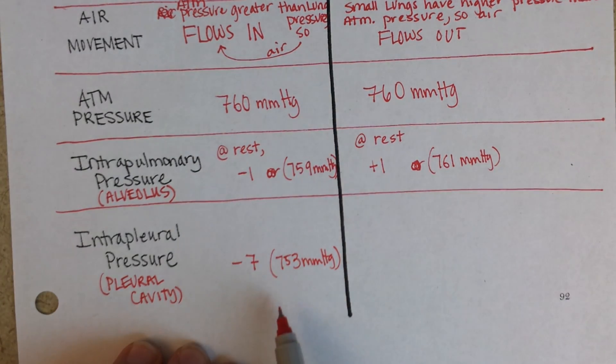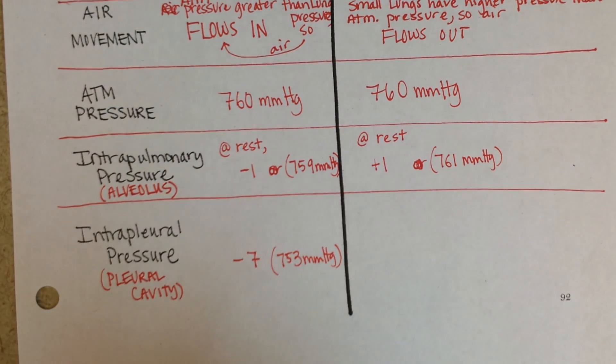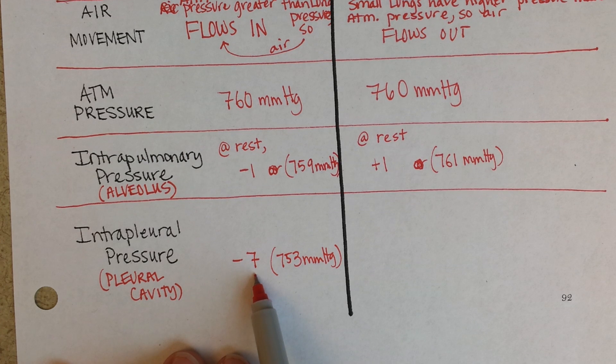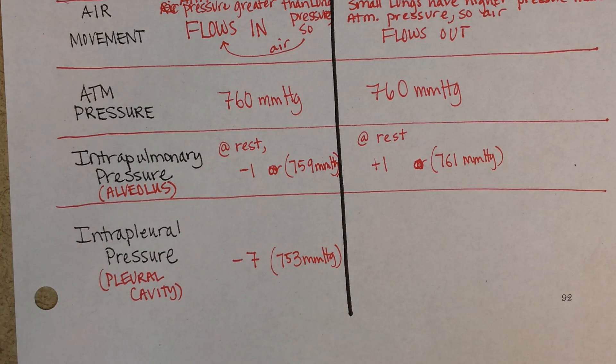When you are going to do a normal breath and breathe in, then the pressure inside the pleural cavity goes all the way down to 753 millimeters of mercury. So there is less pressure there than there is in the alveoli. And that is going to always help keep the lungs inflated, no matter whether you're inhaling or exhaling.